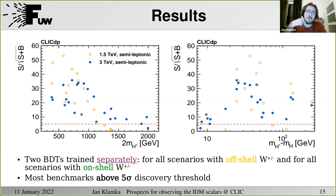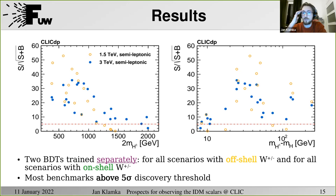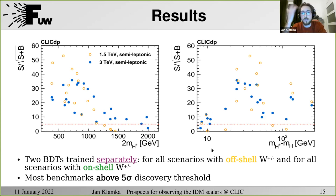The ILC could probe only up to about 250 GeV, right? The FCC-ee is even lighter. But the ILC could have an advantage that it has much lower beam-induced backgrounds, which could increase the reconstruction efficiency in the region of small mass splittings. So this could be an advantage of the ILC, but on the other hand you have this smaller kinematic reach.